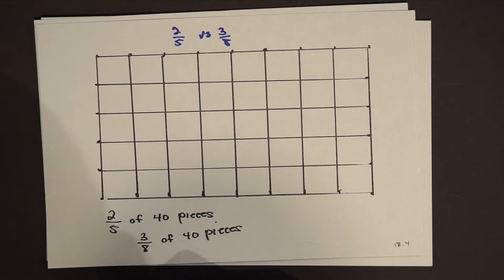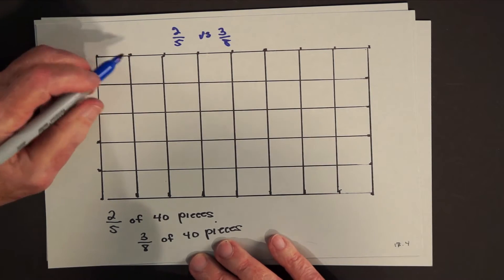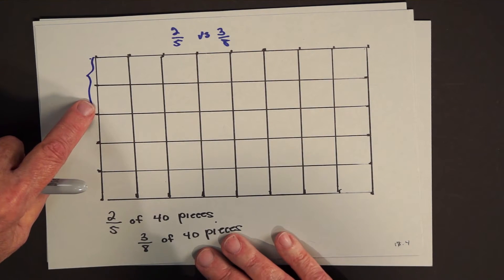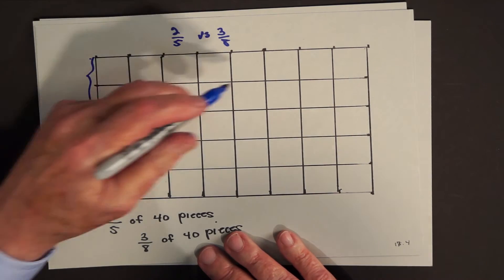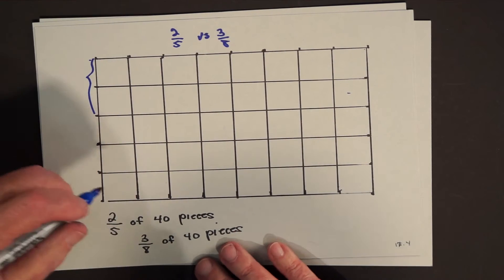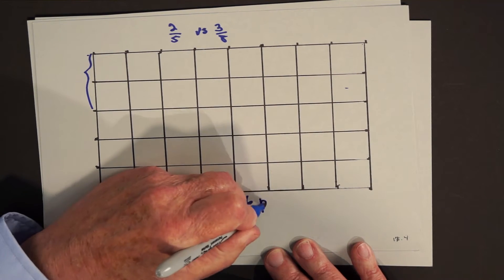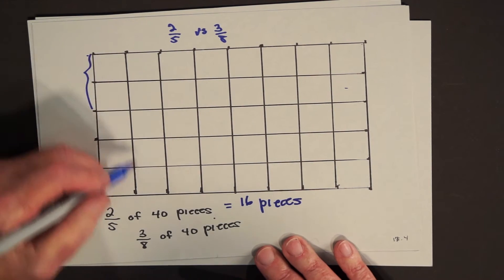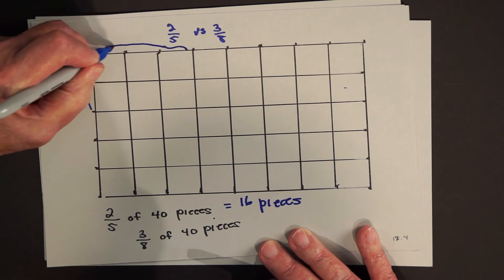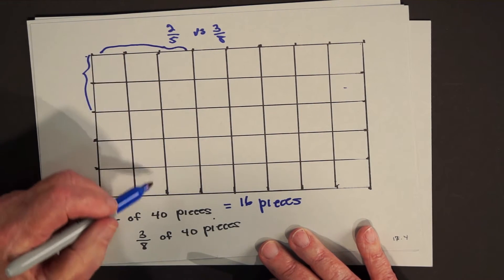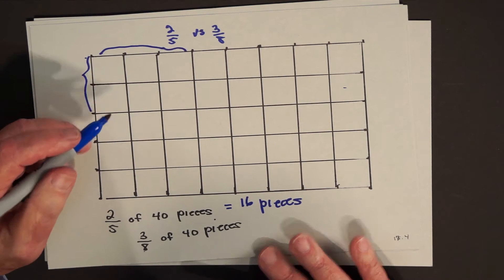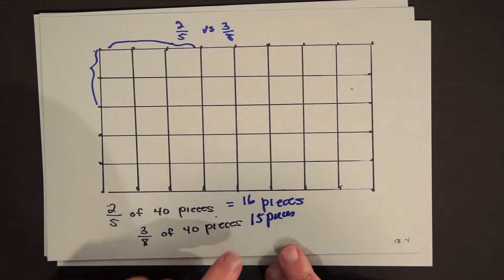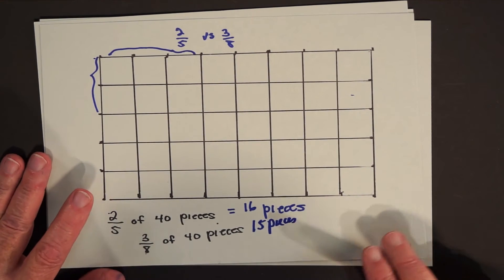So what is 2 fifths of 40 pieces? Here's your 2 fifths — 1 fifth, 2 fifths — each of these is 8 pieces. We want 2 fifths of 40 pieces: 8 pieces plus 8 pieces is 16 pieces. And what would 3 eighths of 40 pieces be? The eighths go this way, so we want 3 eighths. Each eighth is 5 pieces — 40 divided by 8 is 5 — and we're taking 3 of those pieces, which is 15.